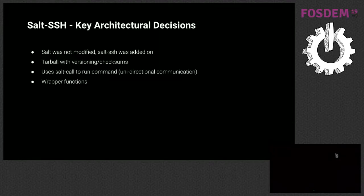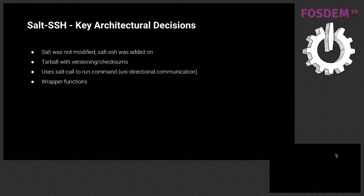To summarize the key architectural decisions: Salt was not modified to add Salt SSH — Salt SSH was added on top of it, which is where you see things like the wrapper functions. We use the tarball — tar everything up on the master, determine what needs to be included, send it over, and run it on the minion. We use salt-call --local, which provides unidirectional communication so the minion doesn't need to call back to the master while running. Wrapper functions provide the same capabilities Salt has but adapted for Salt SSH.